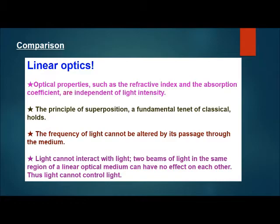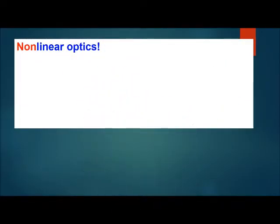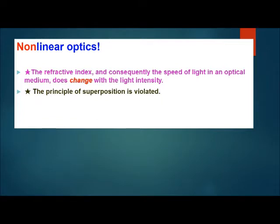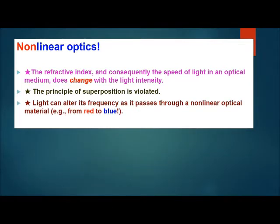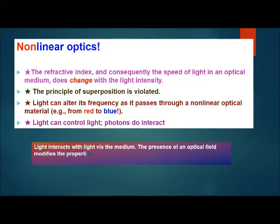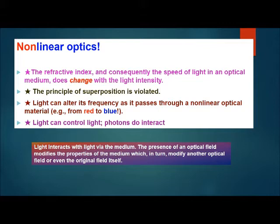Nonlinear optics, on the other hand, states that the refractive index — and consequently the speed of light in an optical medium — does change with light intensity. The principle of superposition is violated. Light can alter its frequency as it passes through a nonlinear optical material, for example a crystal, and it can turn red light to blue light. Light can control light, which means that photons can interact or undergo entanglement. In nonlinear optics, light interacts with light via the medium — the presence of an optical field modifies the properties of the medium, which in turn modifies another optical field or even the original field itself.